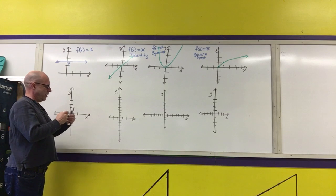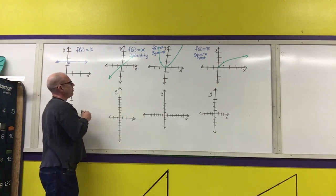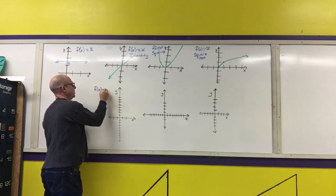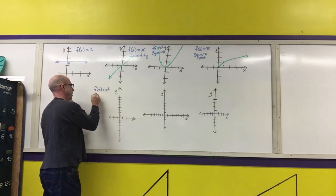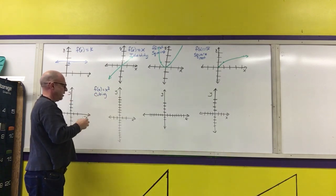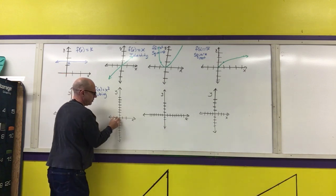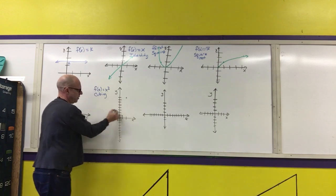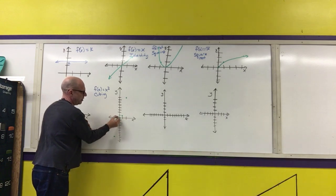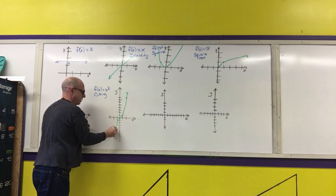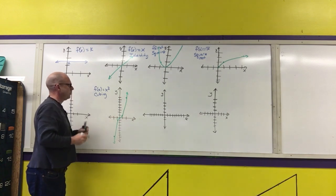Next is f(x) = x³, called the cubing function. Its graph passes through (1, 1), (2, 8), (-1, -1), and (-2, -8). This is the memorized shape of the graph of the cubing function.